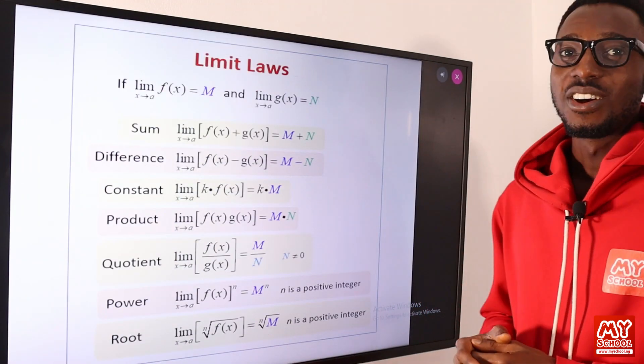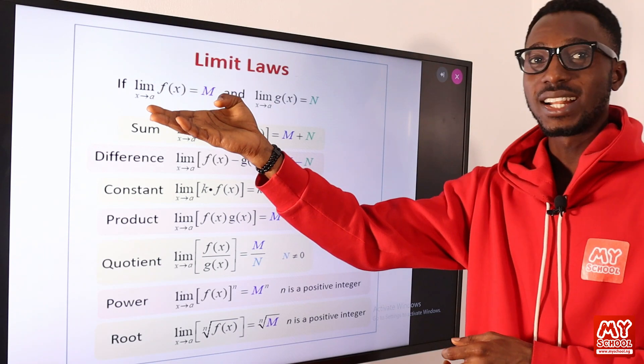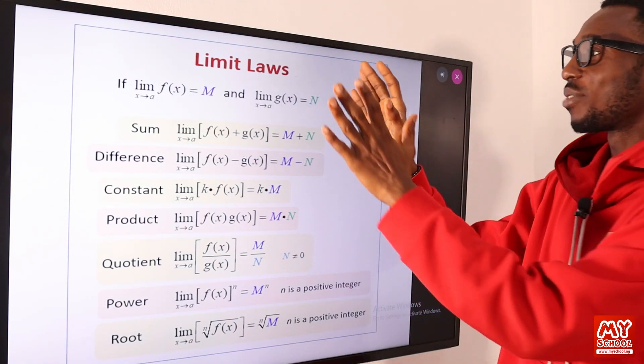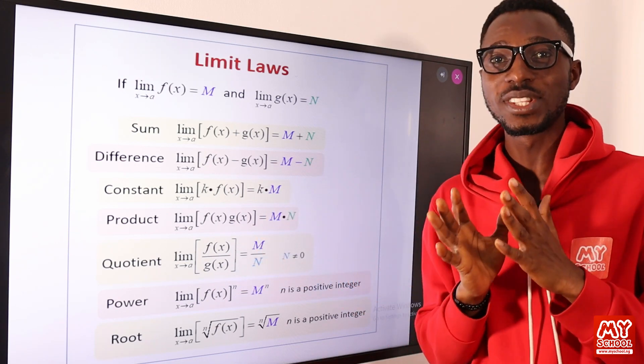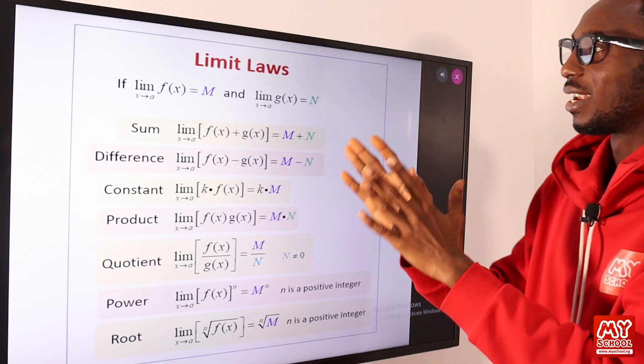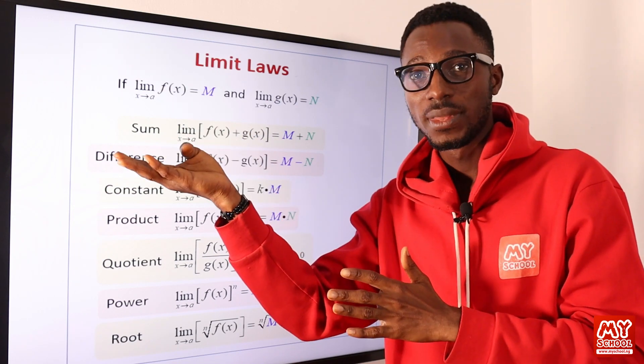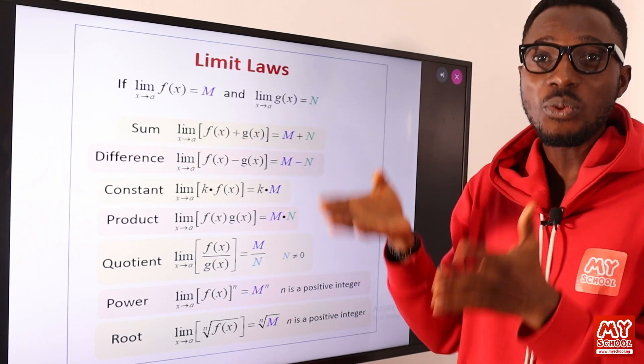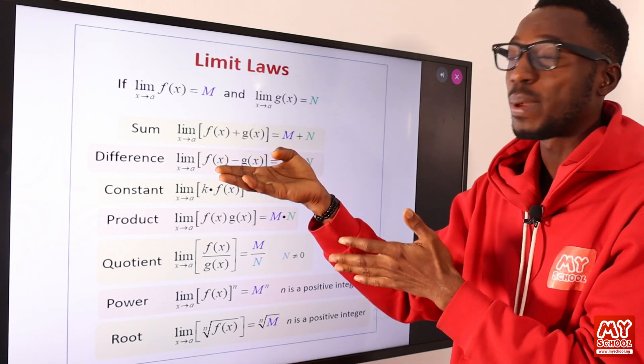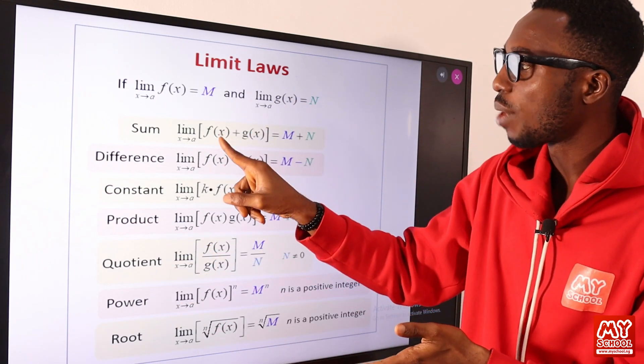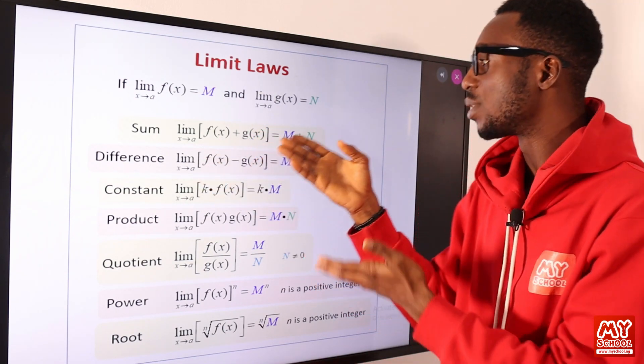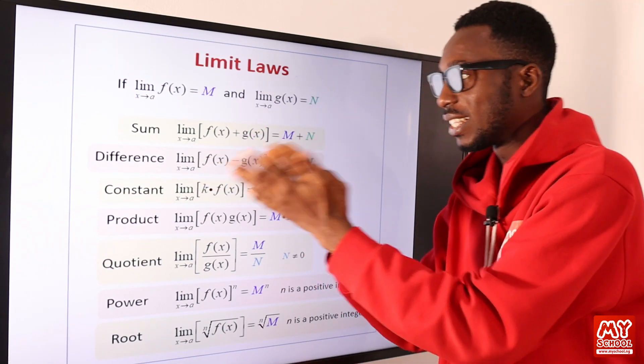Limit laws. These laws or rules are very easy. The sum of the limits of these functions is equal to the sum of their respective functions. If the function you have gotten here is 2 and what you have here is 3, so 2 plus 3 will still give us 5.